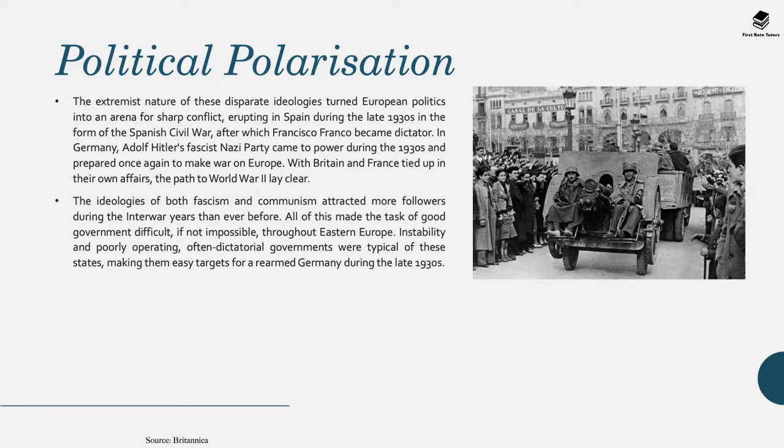The extremist nature of these disparate ideologies turned European politics into an arena for sharp conflict, erupting in Spain during the late 1930s in the form of the Spanish Civil War, after which Francisco Franco became dictator. In Germany, Adolf Hitler's fascist Nazi party came to power during the 1930s and prepared once again to make war with Europe. With Britain and France tied up in their own affairs, the path to World War Two lay clear.